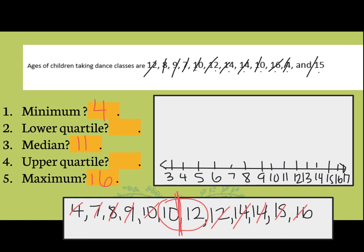Now we have to find our quartiles. The median was 50% of our data — we need to find 25% or halfway on either side. I draw lines in the other direction to make an X, then find the median on each side. Because there were two numbers in the middle, you include both numbers. Cross out the four and cross out the ten — the ten does get included. If you only have one number in the middle, it does not get included. So I cross here and here: I have eight and nine. Halfway between eight and nine is 8.5. Going the other direction including the twelve: I get fourteen and fourteen, so the upper quartile is 14.